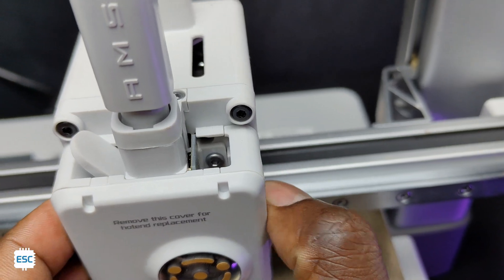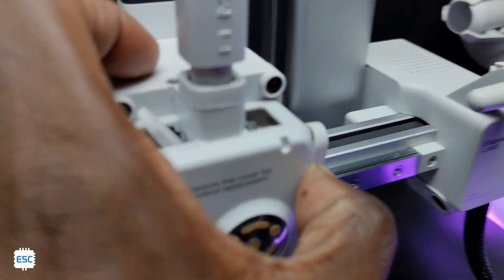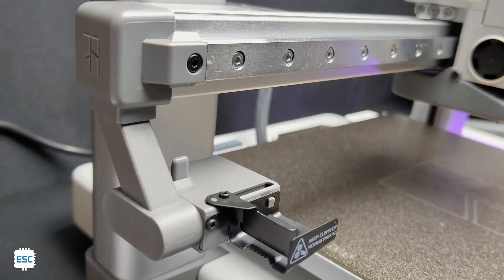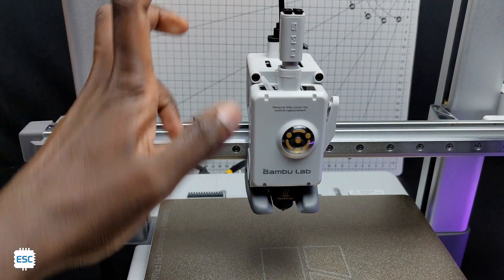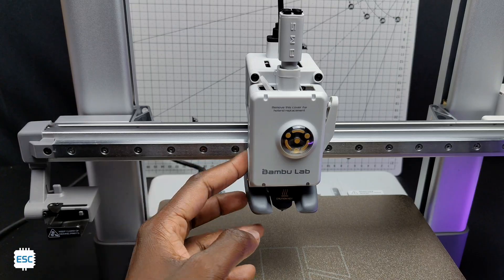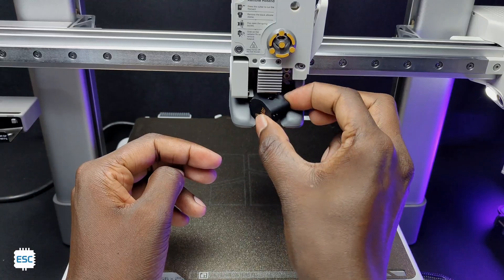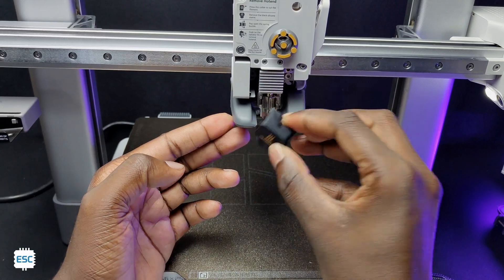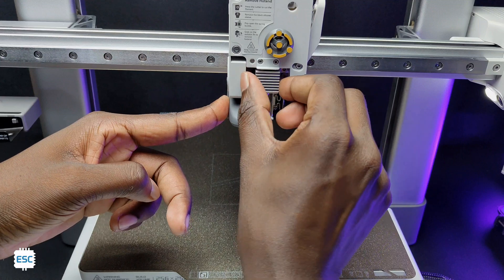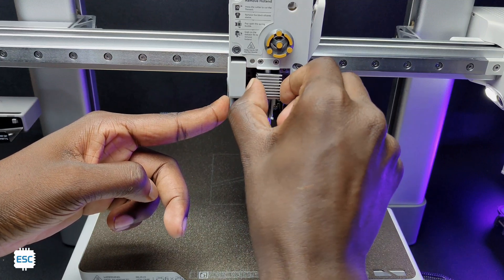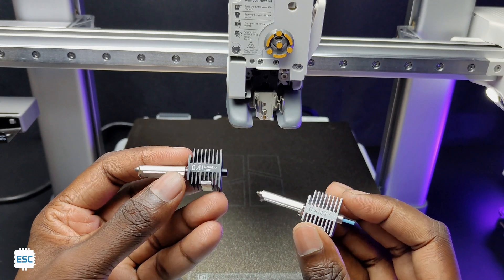This is the filament cutter which will cut the filament when a color change is needed. This is called filament purger which will clean the remaining filament from the nozzle on every color change. The A1 comes with a direct drive extruder system and the nozzle can be changed very easily. The stock nozzle is steel based and it can reach up to 300 degrees celsius. We can also upgrade the nozzle to a hardened steel nozzle for better performance.